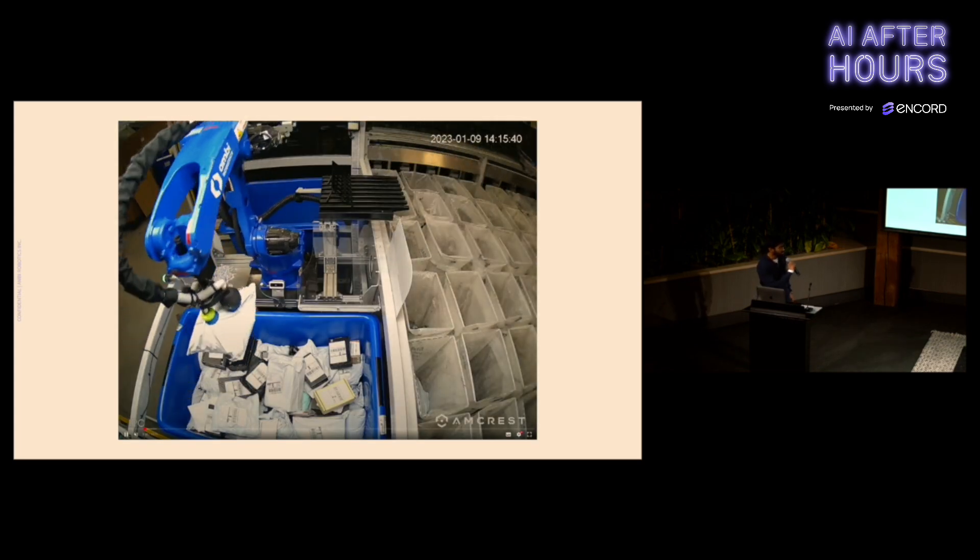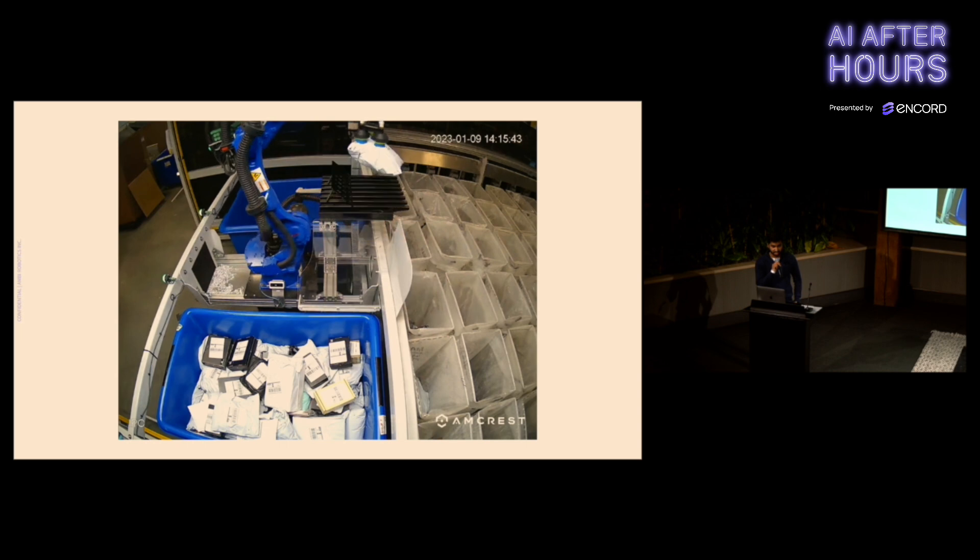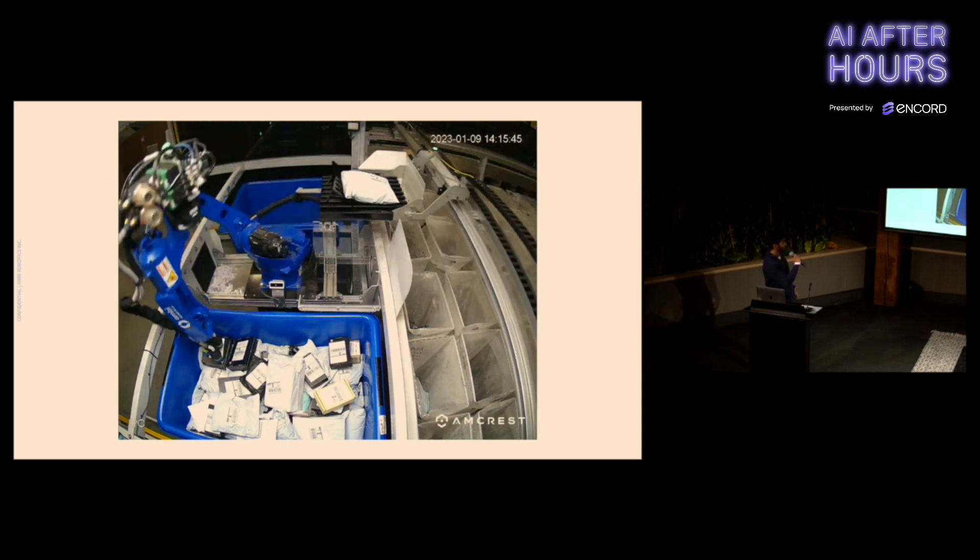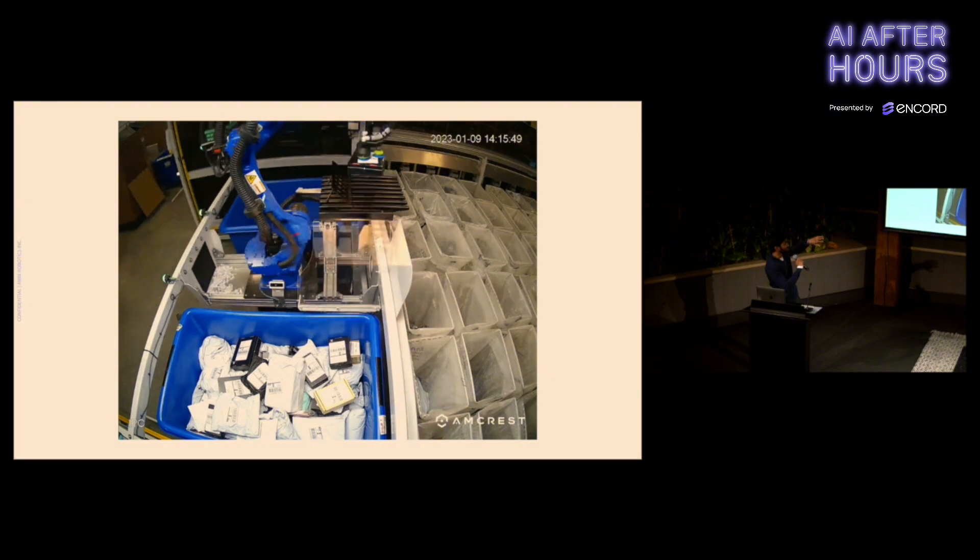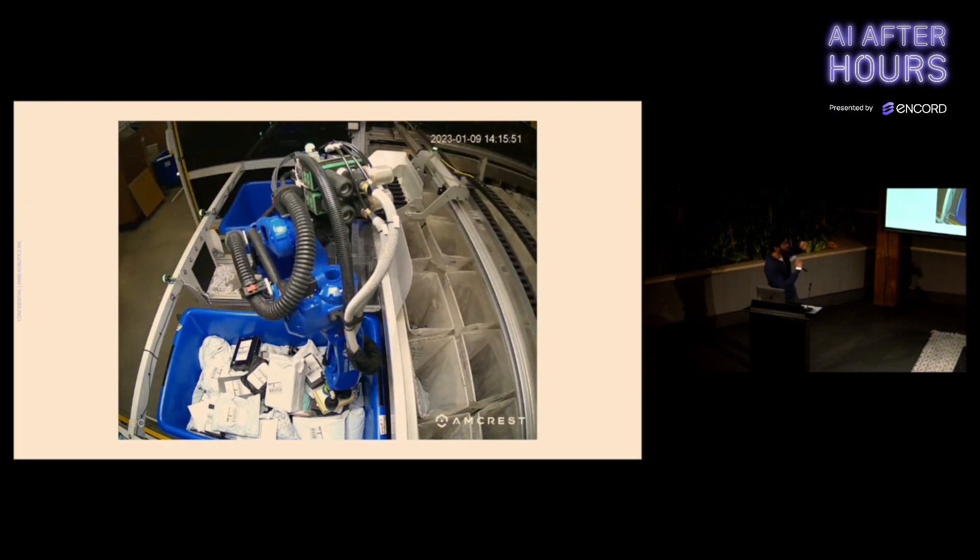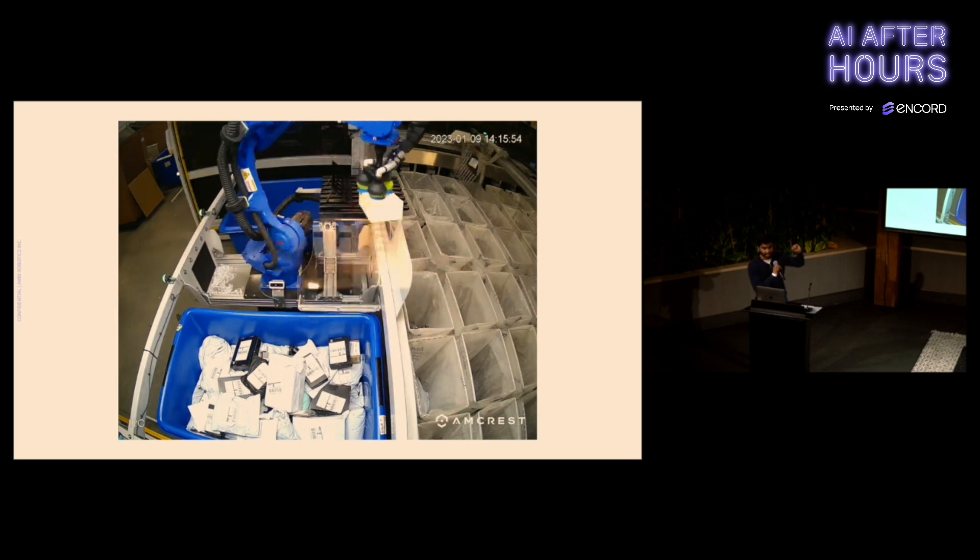Here's some footage from one of our robots in operation. As you can see, the robot is picking items out of a bin. It's intelligently placing them on a buffer, and there's a gantry taking the item out to a mail sack, sorting it.